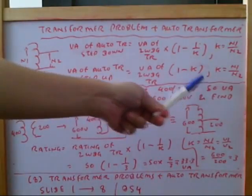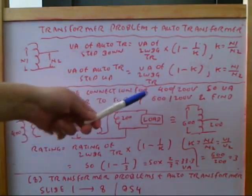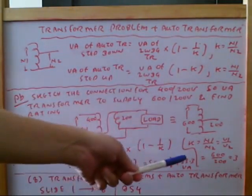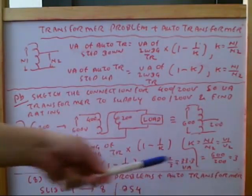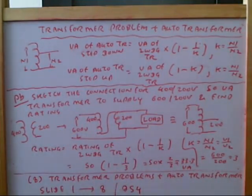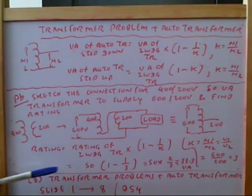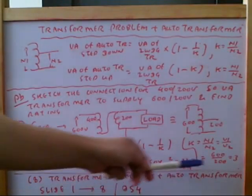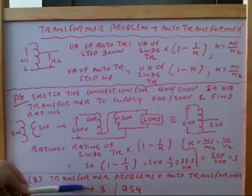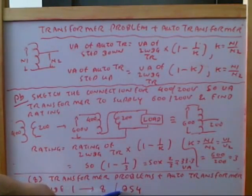So by using the auto transformer, originally VA is 50, but by connecting the auto transformer, VA has been derated to 33.3 VA. So based on this principle theory, you have to do the topic 8 transformer problem plus auto transformer. Study the slide 1 to 8, do the exercise question 54, study the slide 1 to 2, do the exercise question 56.